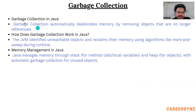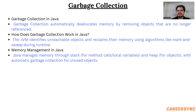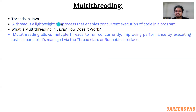Garbage collection questions: What is garbage collection in Java? Garbage collection automatically deallocates memory by removing objects that are no longer referenced. How does garbage collection work? The JVM identifies unreachable objects and reclaims their memory using algorithms like mark-and-sweep during runtime. What is memory management in Java? Java manages memory through stack and heap with automatic garbage collection for unused objects. What are threads in Java? A thread is a lightweight sub-process that enables concurrent execution of code. Multi-threading allows multiple threads to run concurrently, improving performance by executing tasks in parallel — it's managed by the Thread class or Runnable interface.